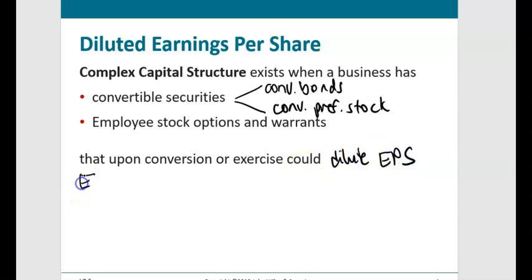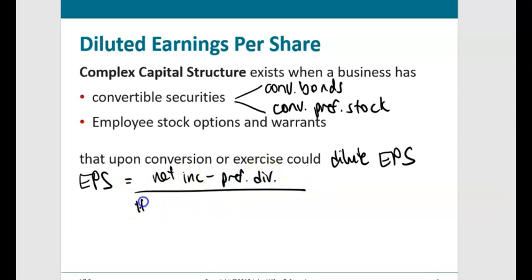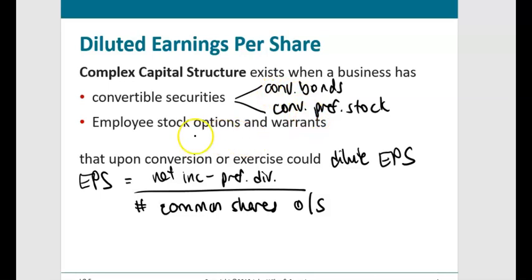What do we mean by diluting earnings per share? Earnings per share is net income minus preferred dividends divided by the number of shares outstanding. Diluted EPS asks: what's the worst case scenario? What would EPS look like if every holder of convertible bonds, convertible preferred stock, and employee stock options exercised their conversion rights? If we increase the denominator, overall EPS goes down because we're spreading the profit over more shareholders.